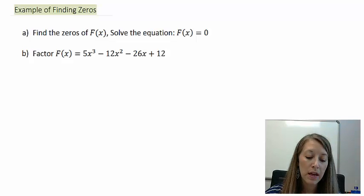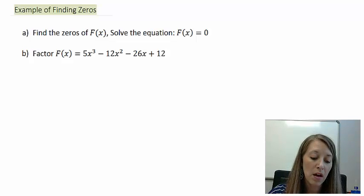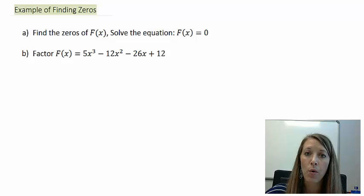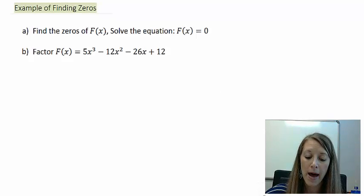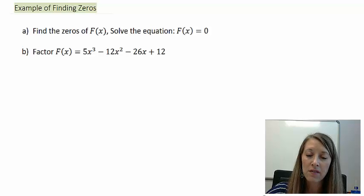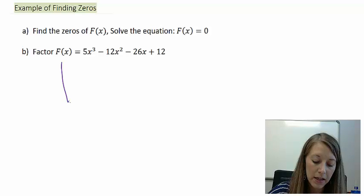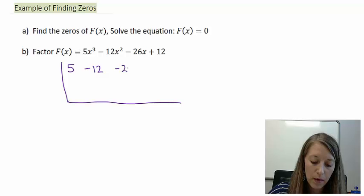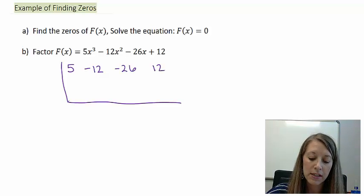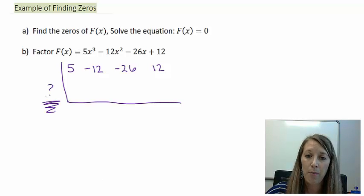We know that we cannot factor this by using any of our old factoring techniques. It has four terms, so we might be able to try factor by grouping, but it won't work out because our groups won't match. So we have to do this either by synthetic division or by long division. I'm going to go ahead and do synthetic division. I think that is the easier of the two. So I'm not missing any coefficients, so I can just list them all here. But again, the concern that we have is what do I divide it by?